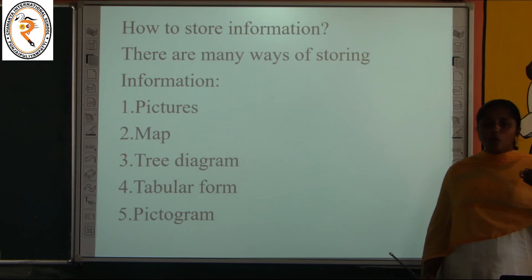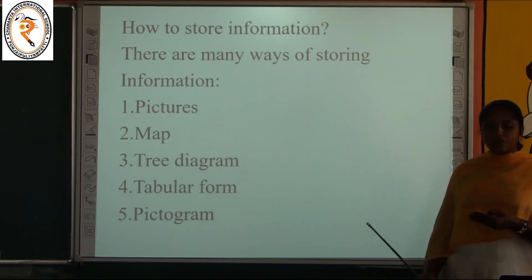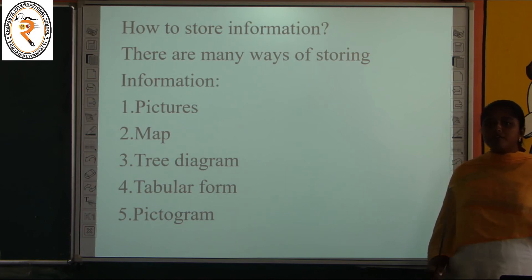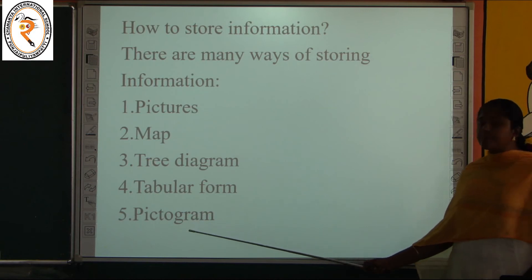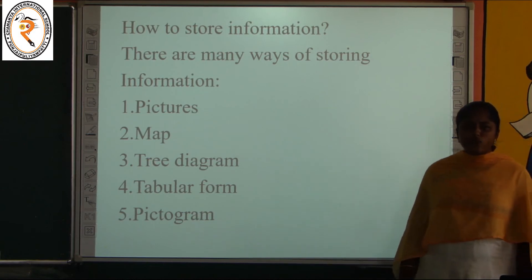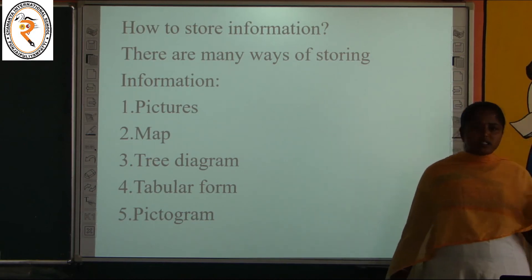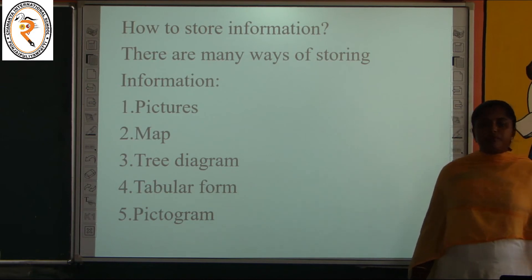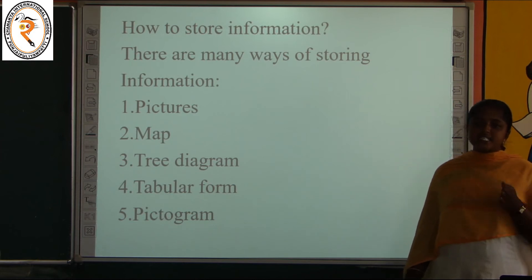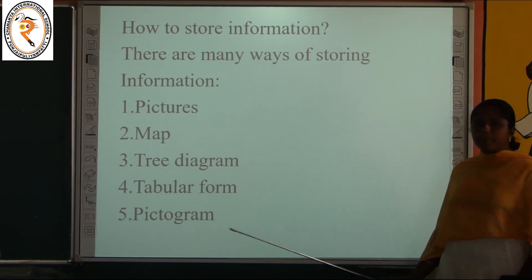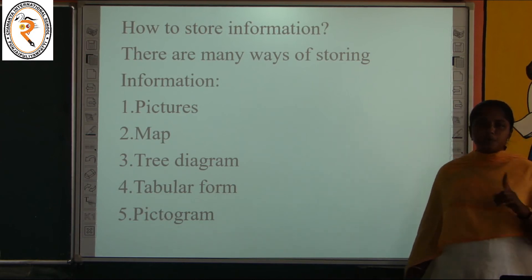What is the meaning of pictures? Pictures means drawings or images. Then map — why do we need a map? To go to a new location or a new place we need a map, because we don't know how to go and where to go. If we store that place in the form of a map it is information and we can easily go to that place. Third is the tree diagram.